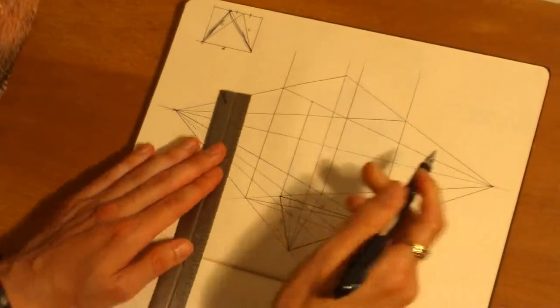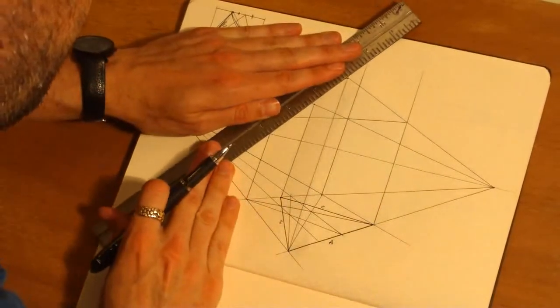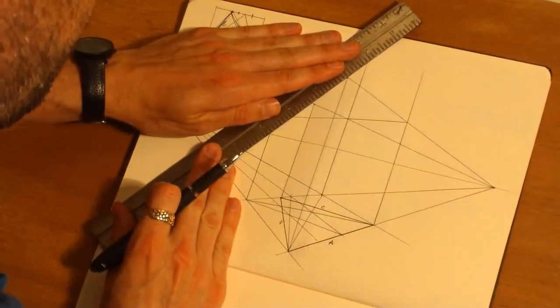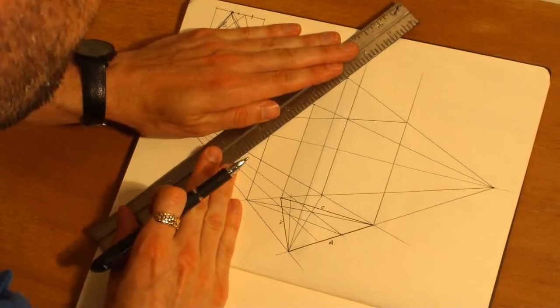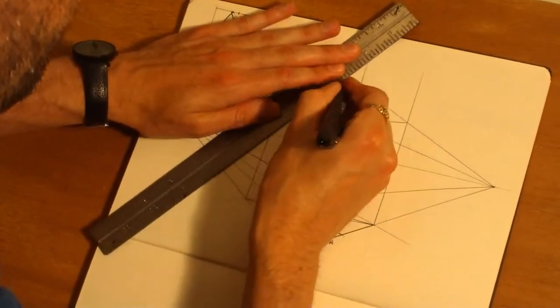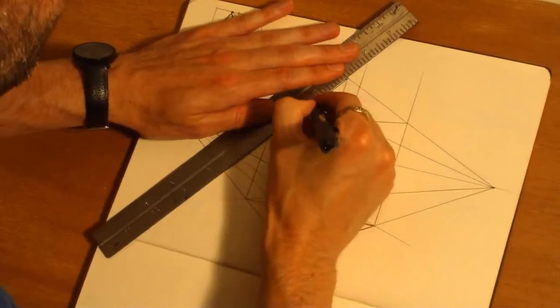So now we've found it. Now what we're going to do is we're going to connect this to this, and then we're going to connect this to this and create our triangle on our top plane. And we'll be, after that we will be done with a triangular solid in two-point perspective.